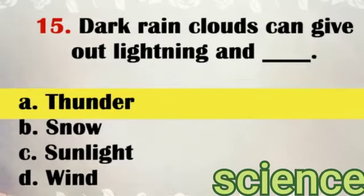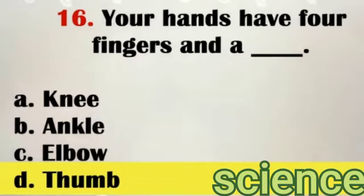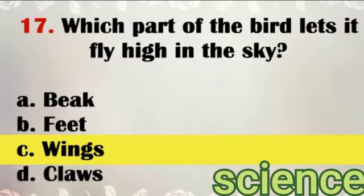Question number 15: Dark rain clouds can give out lightning? Answer: Thunder. Question number 16: Your hands have four fingers and a? Answer: Thumb.